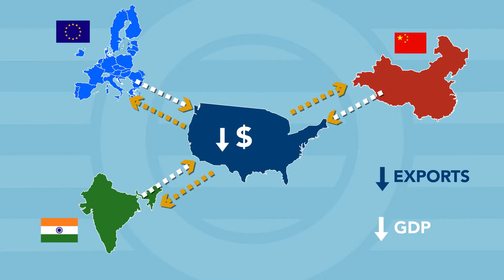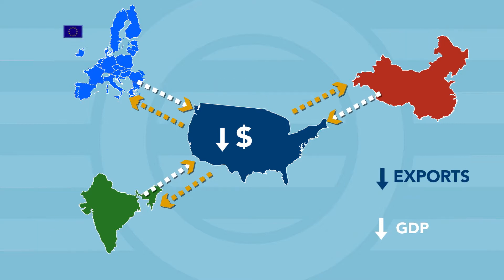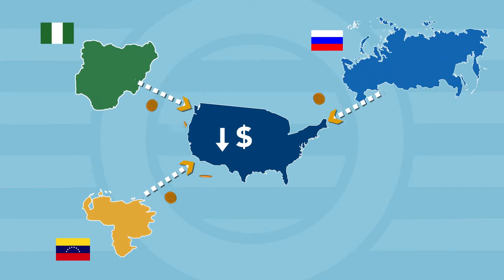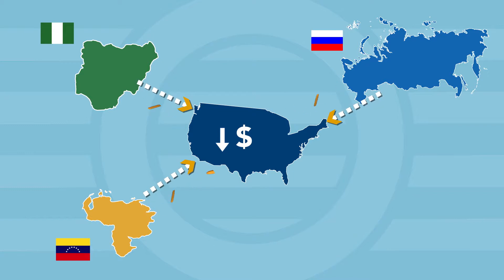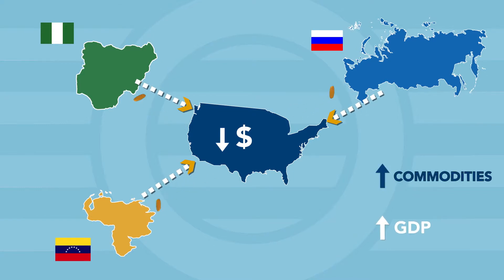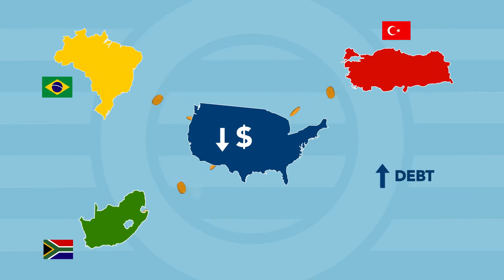Exports from the U.S., however, become more attractive. This can ultimately hamper GDP growth in these countries. The result for developing nations is often much better. Many of these countries sell commodities that are traded in dollars. They'll benefit from increased demand for these assets, which drives prices up and boosts GDP. These countries also often borrow in dollars, so a devalued dollar makes their debts easier to repay.